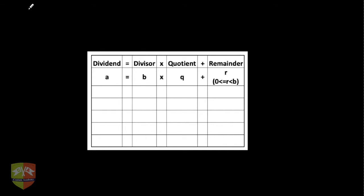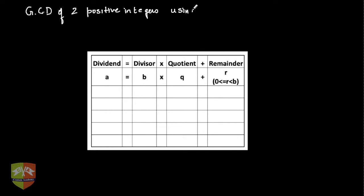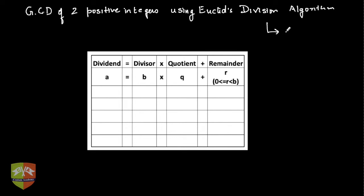In today's session we are going to learn the way of finding GCD of two positive integers using Euclid's division algorithm. Euclid's division algorithm is dependent on Euclid's another very famous contribution to mathematics or number theory, which was Euclid's division lemma.